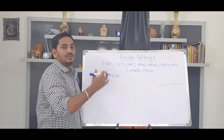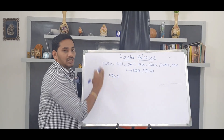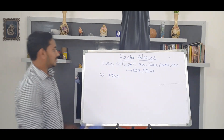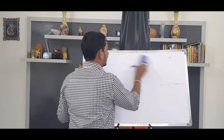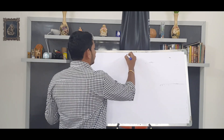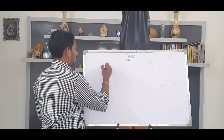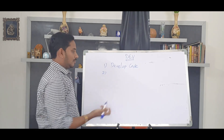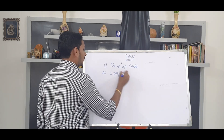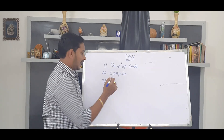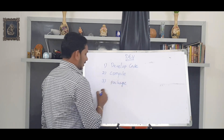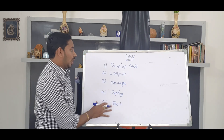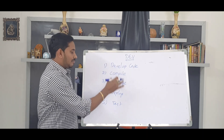We can deploy, test, collect feedback, and iterate. The general procedure in a Dev environment is: developer writes code, compile, create, deploy, and test.